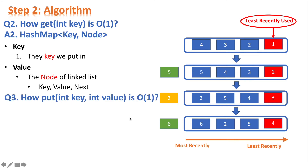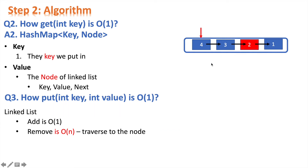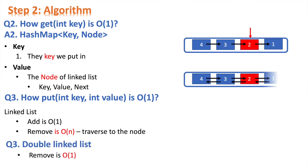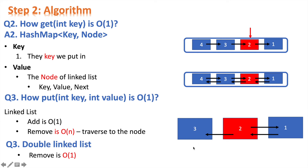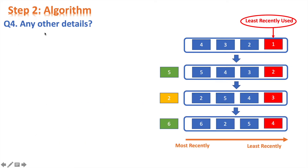Similarly, how do we make the put function O(1)? For a linked list, the add operation is O(1), but remove is O(n) because we have to traverse to find the node. The solution is to use a doubly linked list. To remove node 2, we make node 3's next point to node 1 instead of 2, and node 1's previous point to node 3 instead of 2. This removes node 2 in O(1). Since we use a doubly linked list, we also need a previous pointer. So, a hash map gives us O(1) get, and a doubly linked list gives us O(1) put.